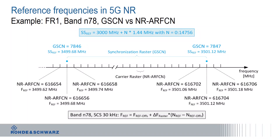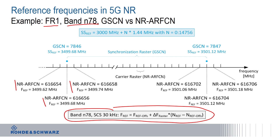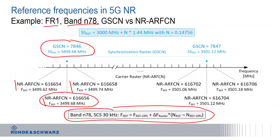I have also an example for you. Taking frequency range one — the sub-6 GHz space — I picked band 78, which is basically 3.5 GHz. Now you can see that when we calculate the different NR-ARFCN numbers that are possible using the correct equation and offset, some of these numbers actually correspond to a global synchronization channel number. That is a piece of the standard we have to understand, but again, global synchronization channel numbers have a much wider granularity than the actual channel raster defined by NR-ARFCN, as shown here in our example.